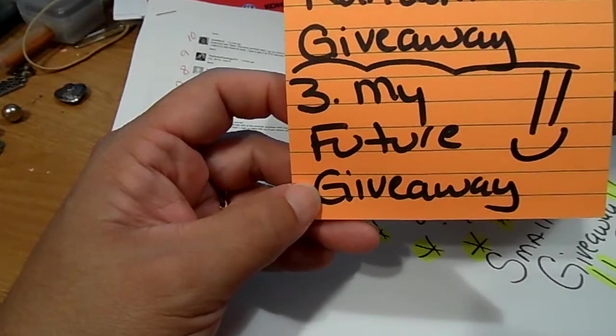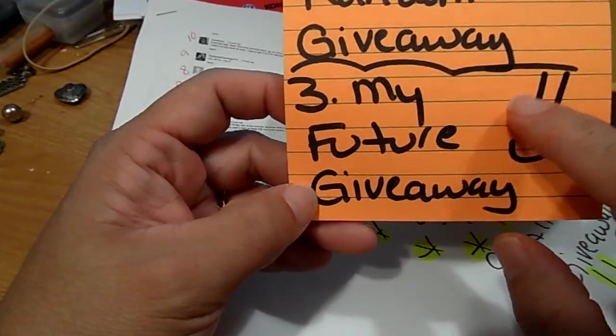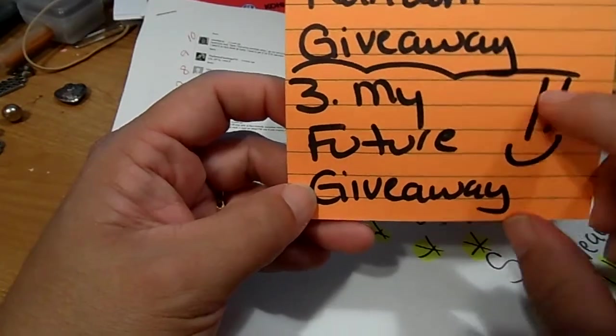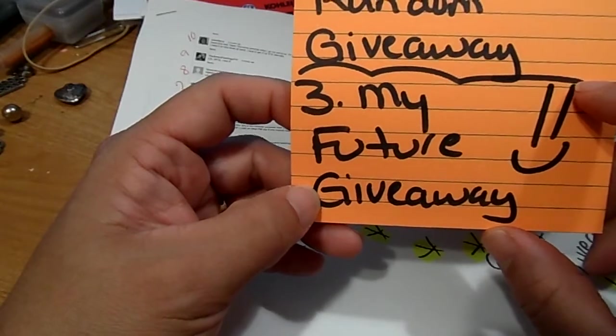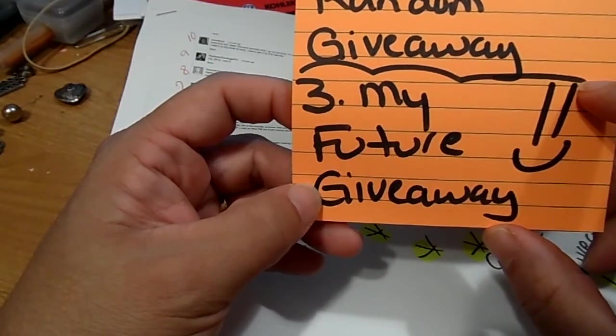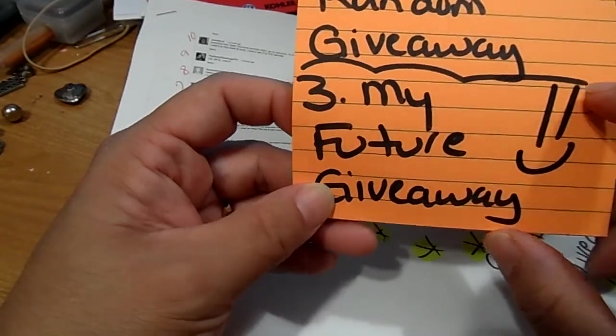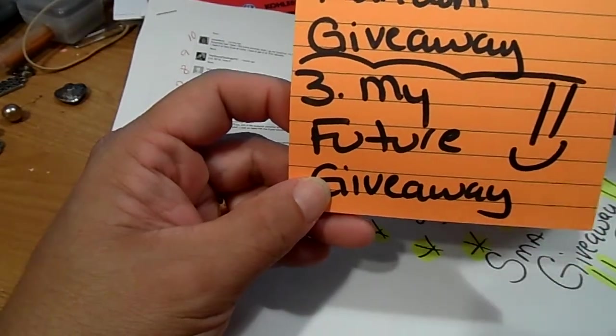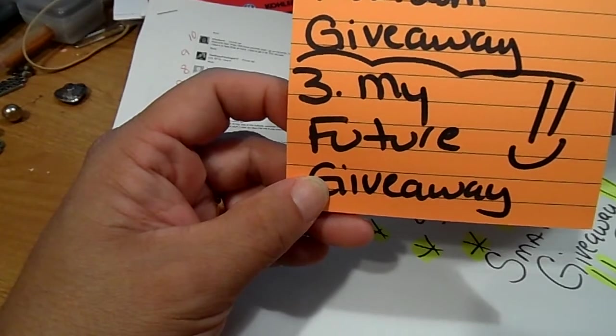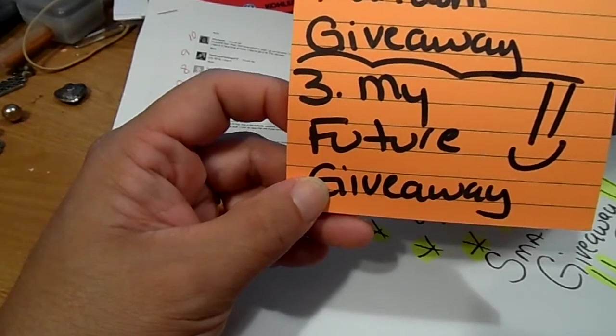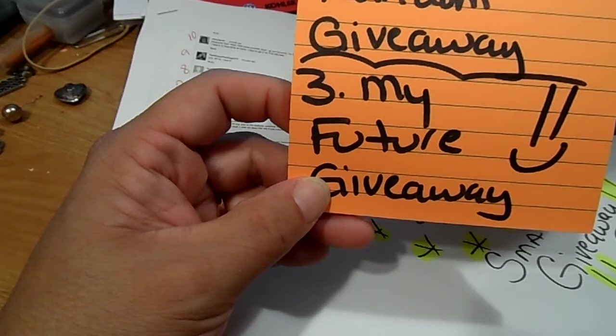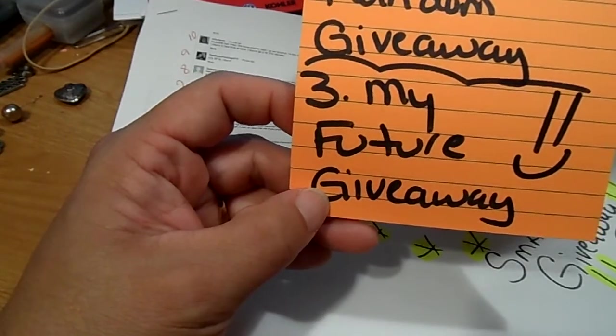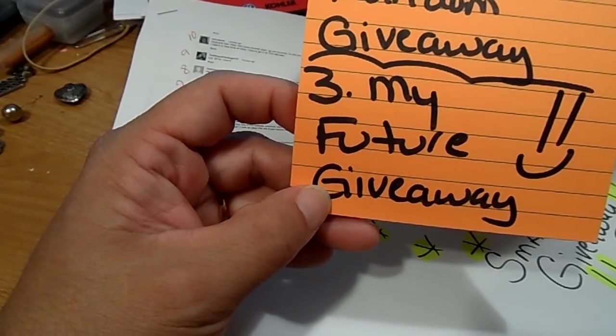But the future giveaway will include a lot of Christmas stuff because it's Christmas in July. I'm gonna have Christmas stamps, Christmas paper, Christmas embellishments, and other stuff as well, not just Christmas. Because Christmas in July is very common and since my birthday falls exactly six months before Christmas, I thought it would be the perfect opportunity.